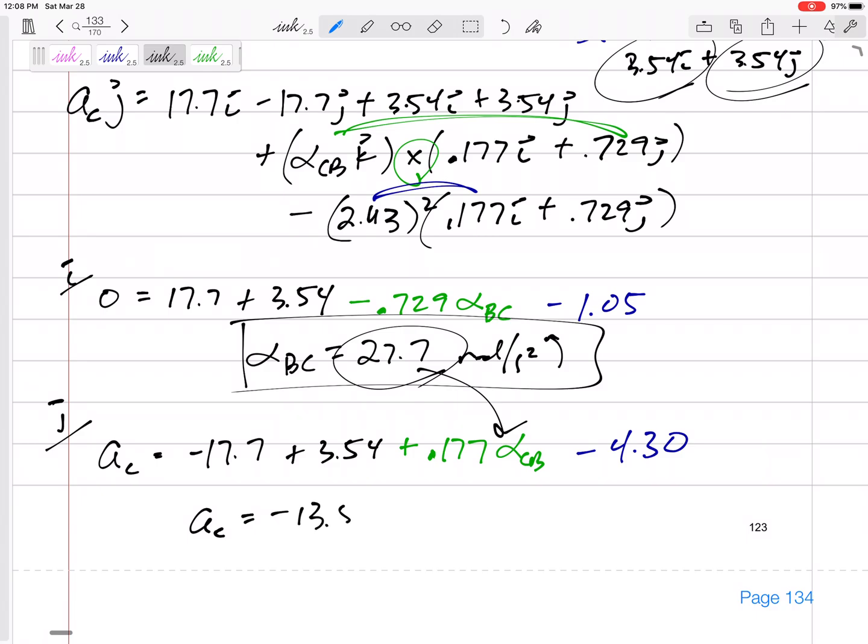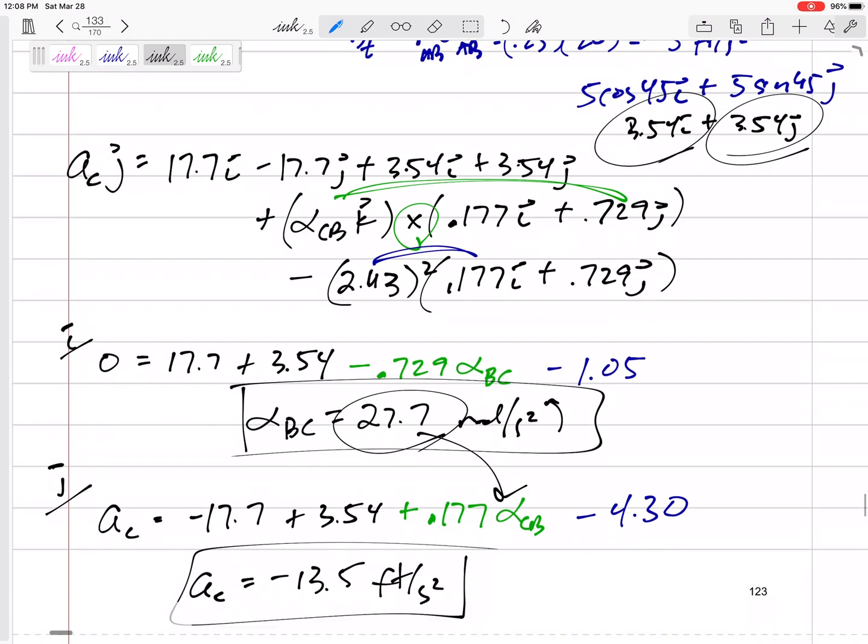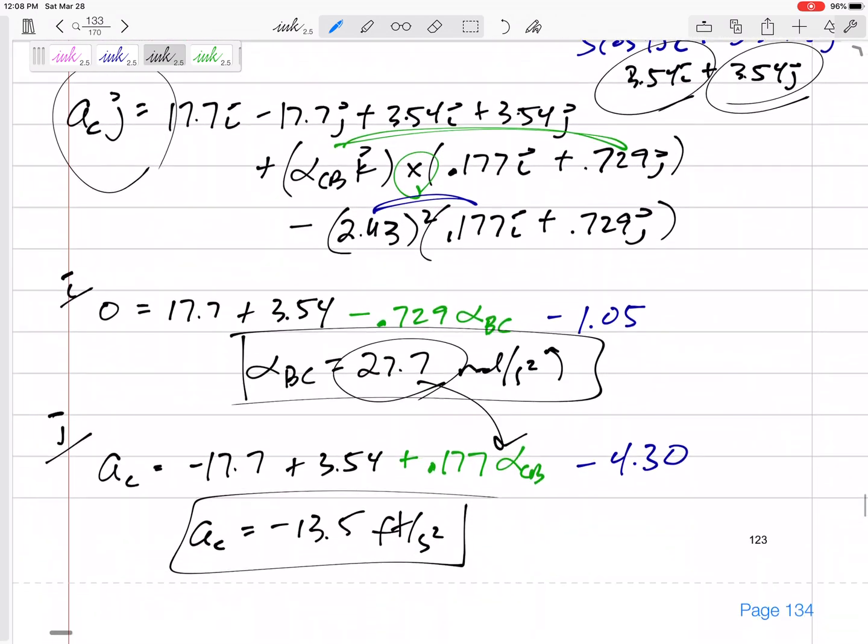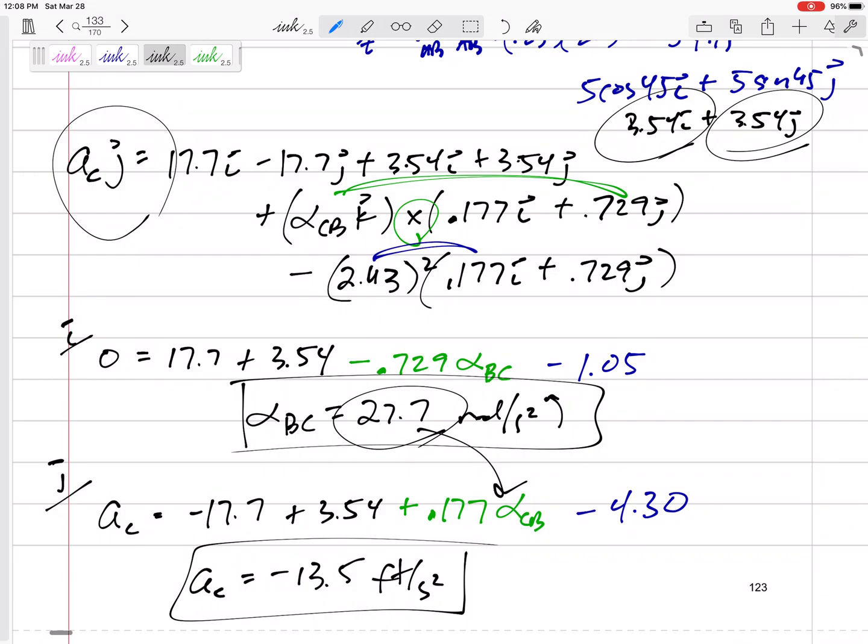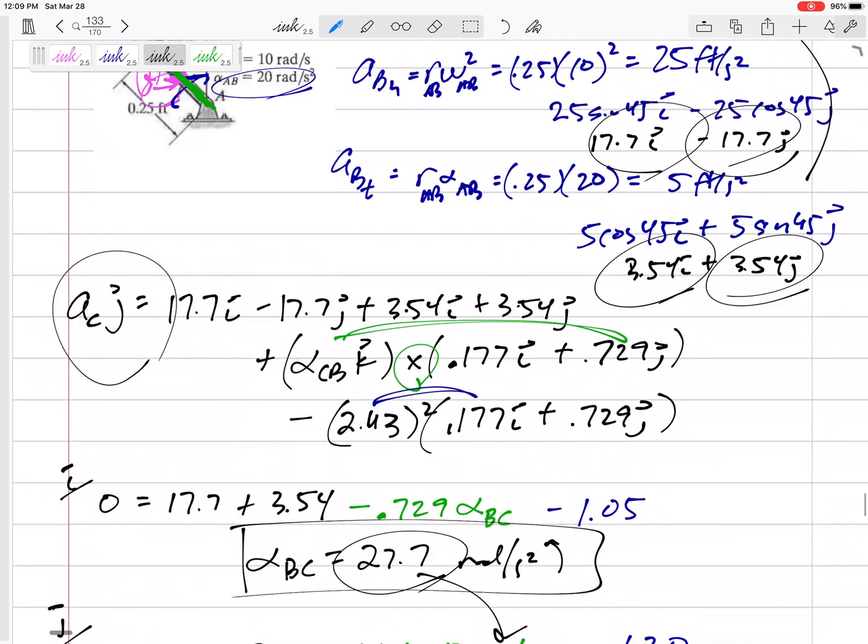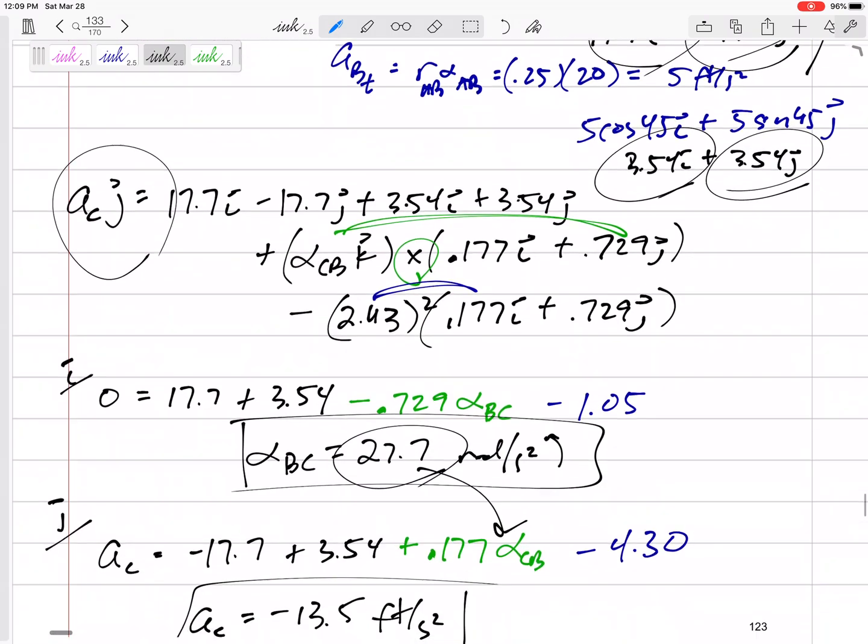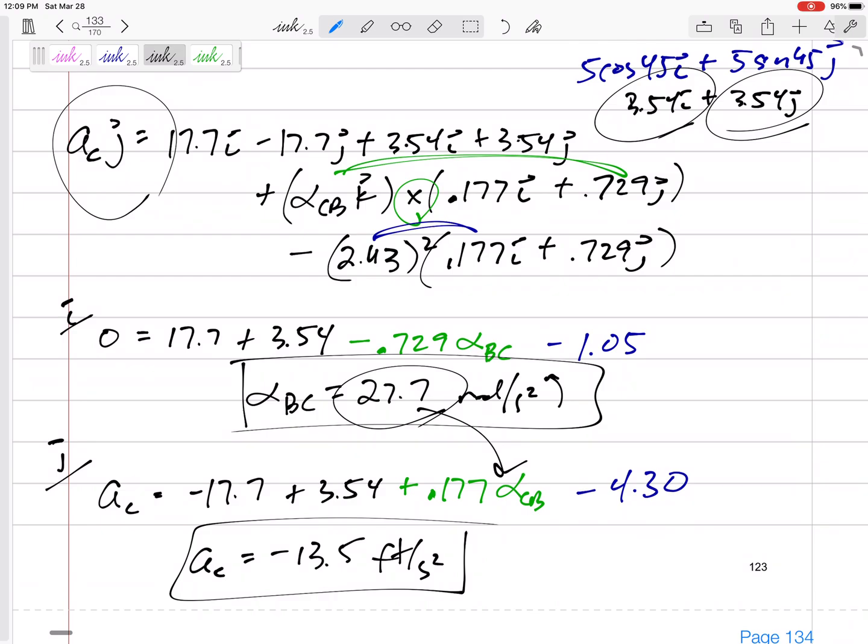a_C negative 13.5 feet per second squared. What does that negative mean? It means I guessed the wrong way. I guessed it was in the positive J. I guessed that it was accelerating up, but in this case, I guess it's accelerating down right there. The direction of that acceleration, the positive or negative of that acceleration is going to be hard. I don't know if you can guess that correctly. There's no good way to visualize that as opposed to velocity directions, but I did know that it was confined along that slot, and it was linear. So it turns out it was down 13.5 feet per second squared.